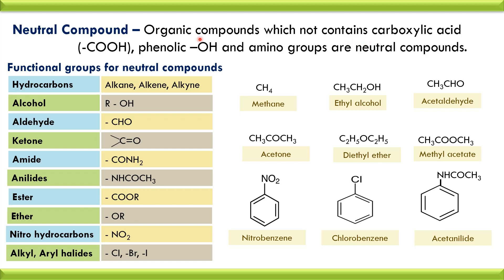Remember that compounds which do not contain carboxylic acid group, phenolic OH group, or amino group — all such compounds come under the group neutral. That is the type of the compound is neutral. Thus, organic compounds are divided into 4 types: acid, base, phenol, and neutral.